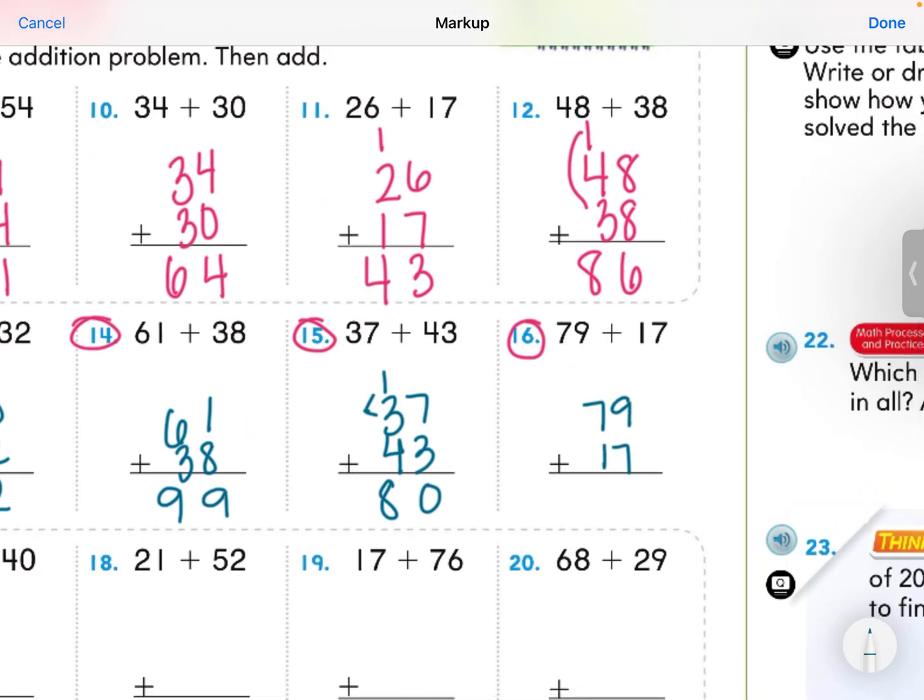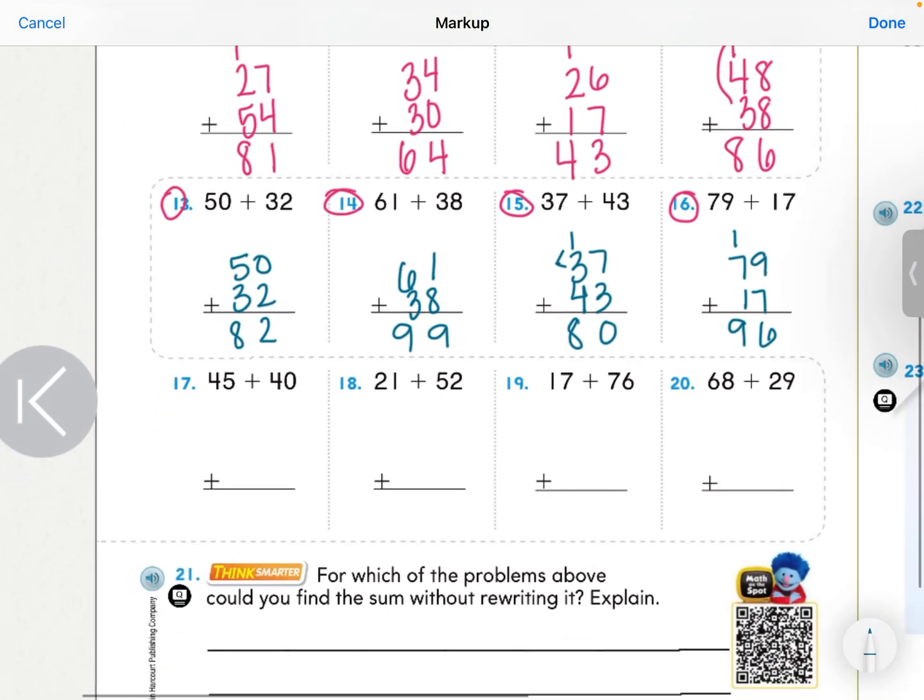Number 16, 79 plus 17. 9 plus 7, 16. 7, 8, 9. Did we match? Did you and I get all the same answers? I hope so.